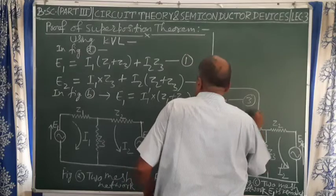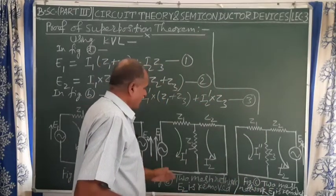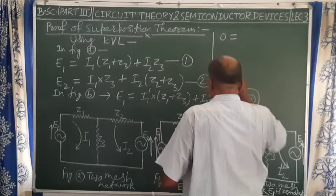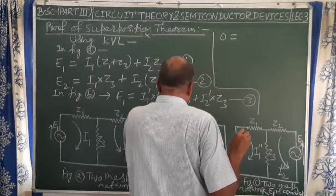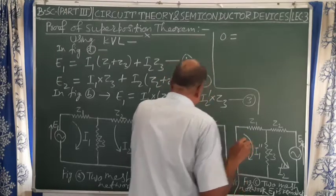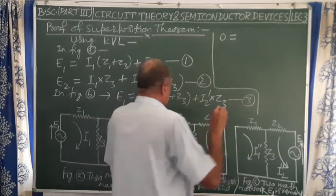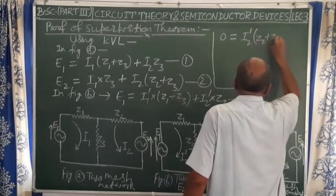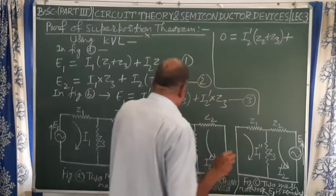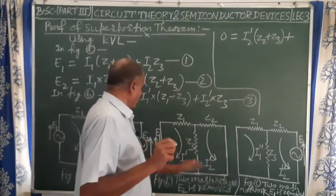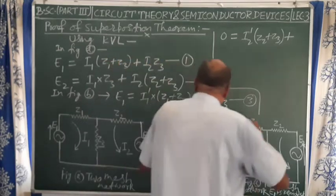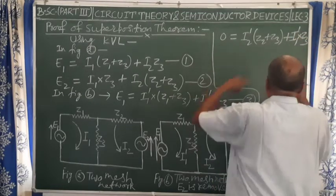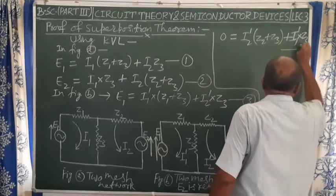In the second loop of figure B, since the EMF generator e2 has been removed, the total EMF is zero. Applying KVL: 0 = i2-dash·(z2 + z3) + i1-dash·z3. This is equation number 4.